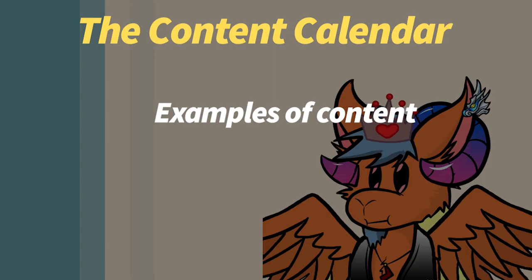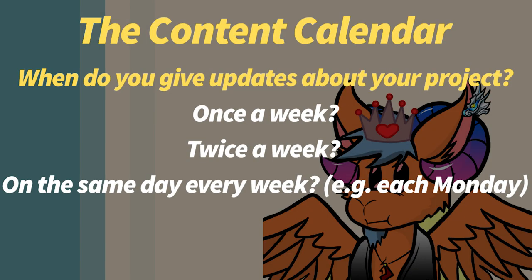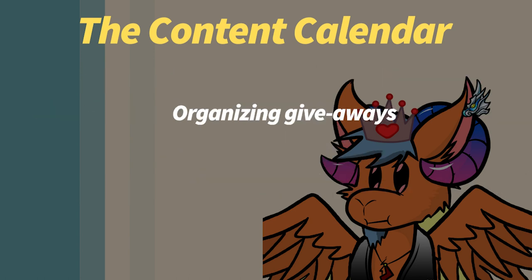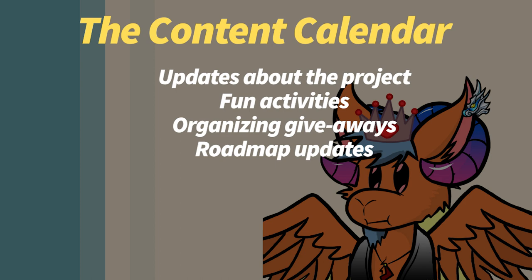You can think about the following aspects: When do you give updates about your project? What fun activities can your community expect? Do you plan on giveaways on certain dates? And what is the next step according to your roadmap? Plan all those activities in a content calendar.